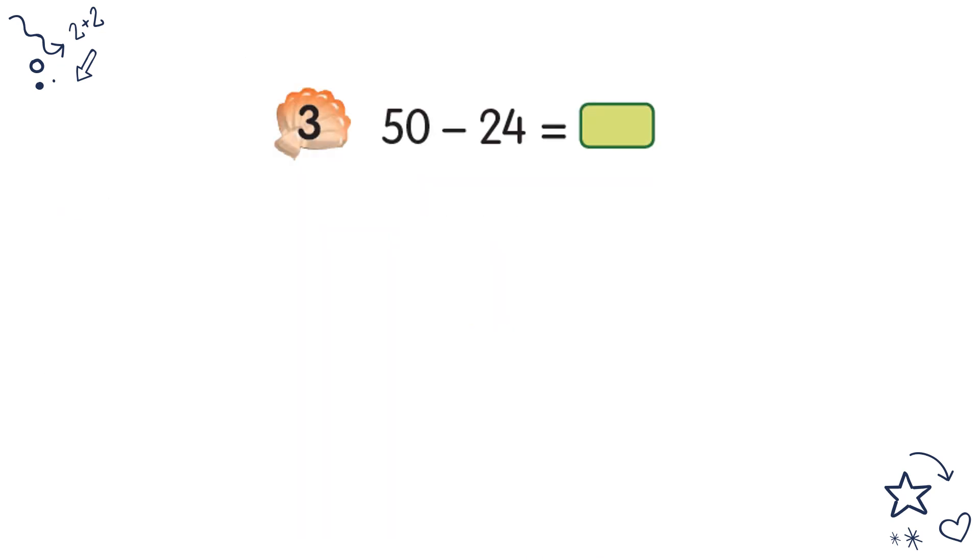Question number 3: 50 minus 24. Write the number properly and underline using your ruler. Now, 0 cannot minus with 4. You cannot take 4 minus 0. So not enough, you borrow from 5.